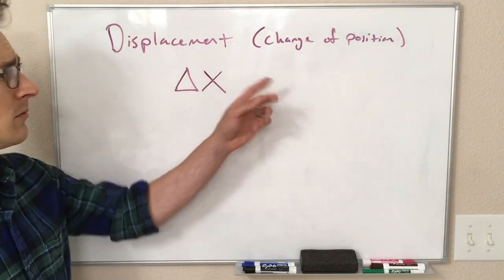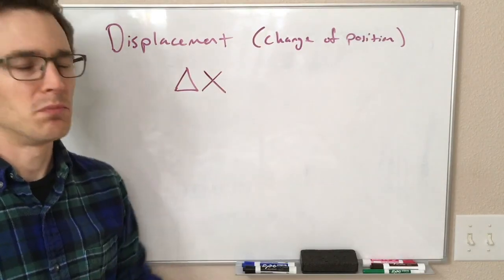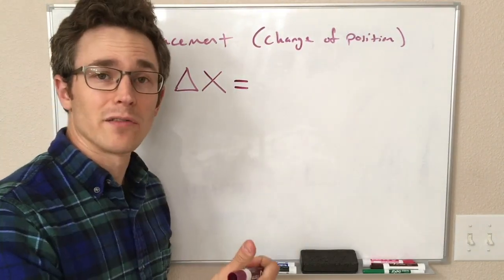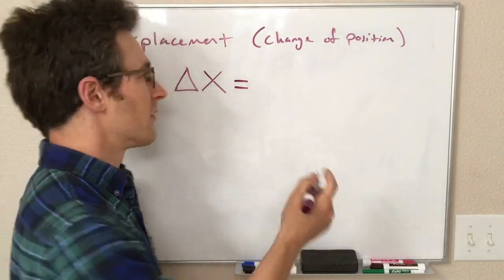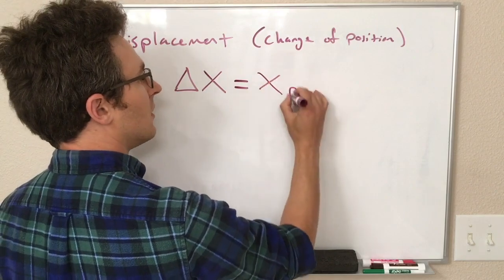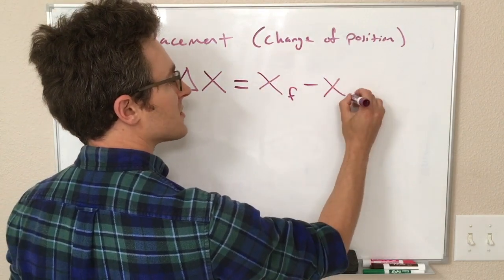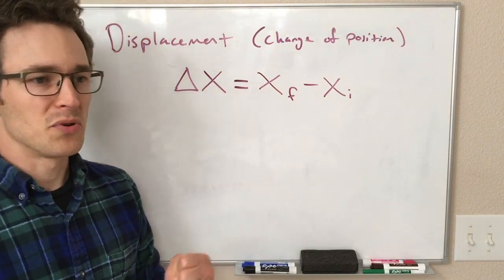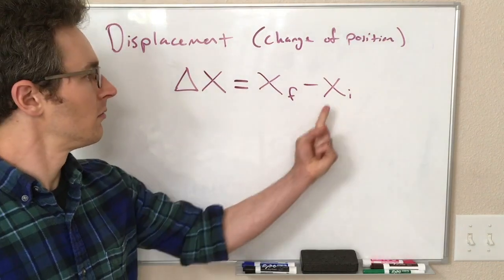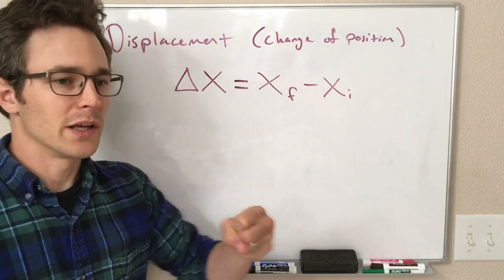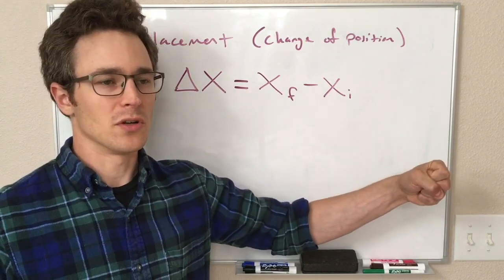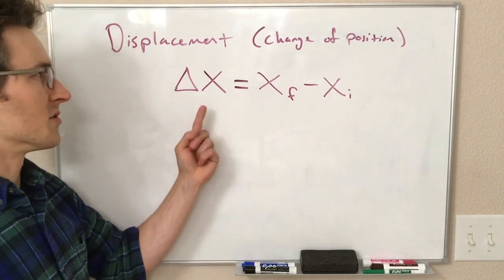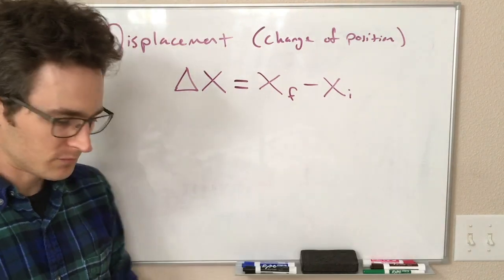Just like any change being measured, delta x is going to be the final value of that variable minus the initial value of that variable. So this is x final minus x initial. So we have an object that started at position x initial, and we plug that value in there, and later on at some other point, it's at position x final. We plug that number in there, and the difference between those is our displacement.